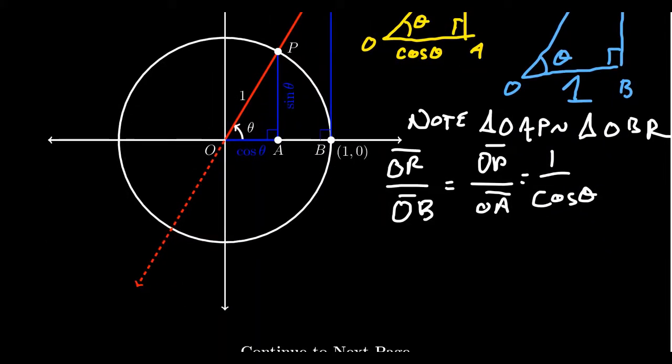Since OB is one, this shows that OR equals one over cosine theta, which is exactly secant theta.